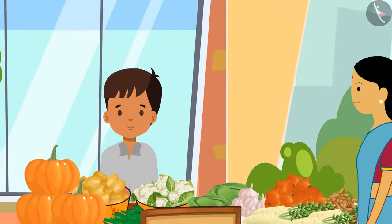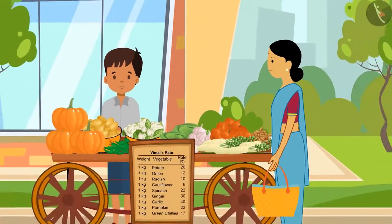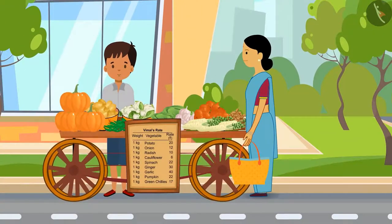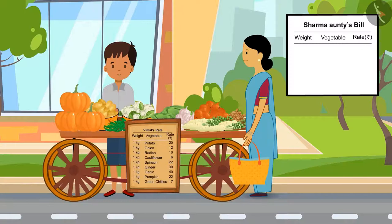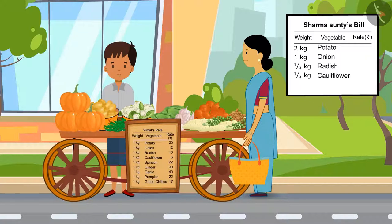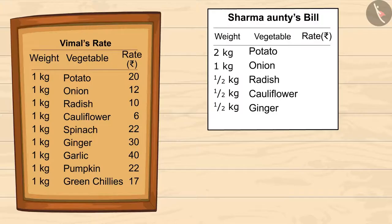Let's see — Sharma auntie is buying some vegetables from him. She bought two kgs of potatoes, one kg of onions, half a kg of radish, half a kg of cauliflower, and half a kg of ginger. Let's together find out the total price of Sharma auntie's purchase from Vimal.